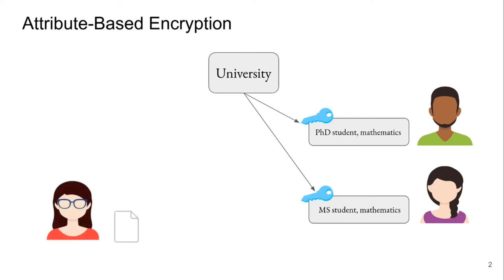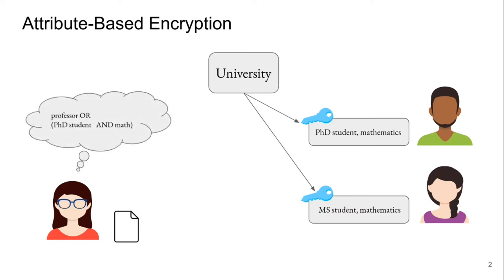Now consider a party who has a file — some document — and she wants to share this document with some parties, but not with everybody. She is thinking of a policy: she wants to share this document with professors or PhD students in mathematics. She can leverage this attribute-based encryption system to produce a ciphertext out of this file. This ciphertext can be published, for example on the university server, where everybody can see it, but only those who have a secret key satisfying the policy will be able to decrypt. So the first student will be able to decrypt, but the second student cannot.